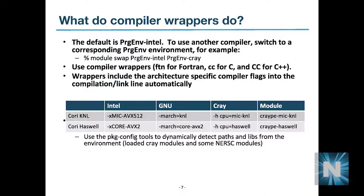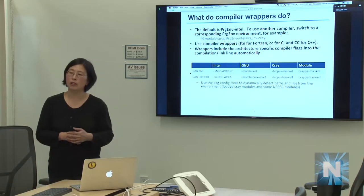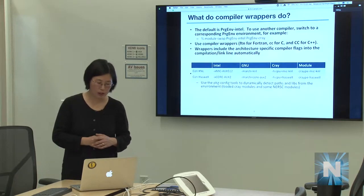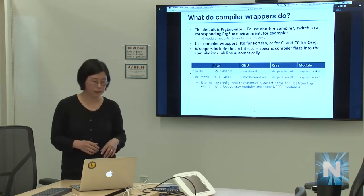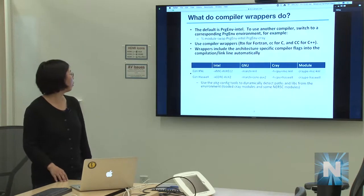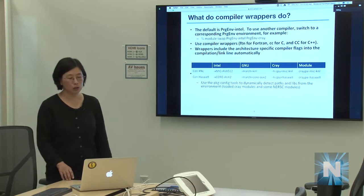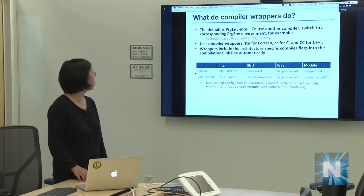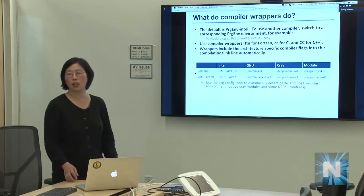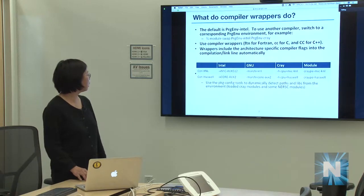When compiling, always use the Cray wrappers — FTN for Fortran, CC for C, and capital CC for C++. These wrappers automatically link MPI libraries, Cray scientific libraries, and any loaded modules like CrayNetCDF. The default compiler environment is Intel. To switch compilers, use 'module swap PrgEnv-intel PrgEnv-cray' or similar.